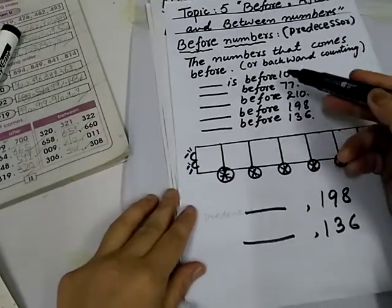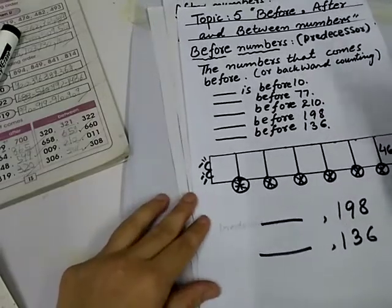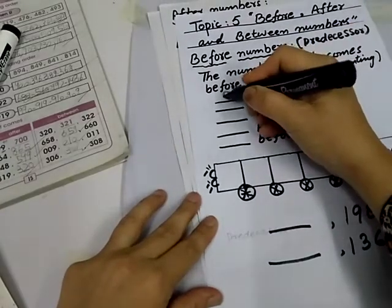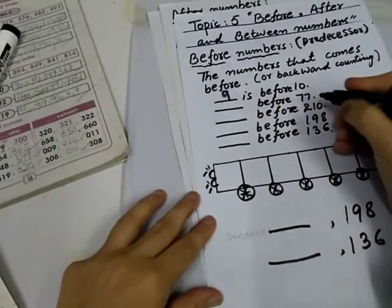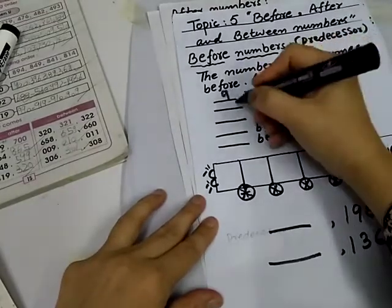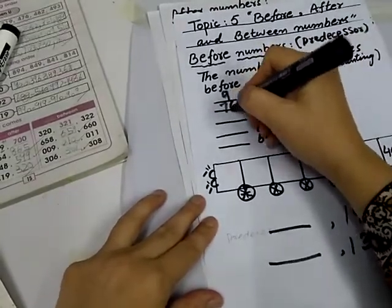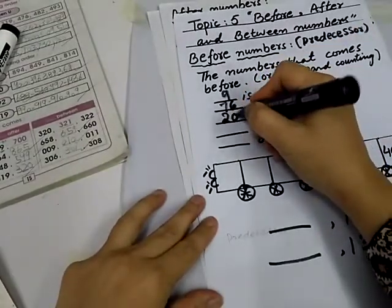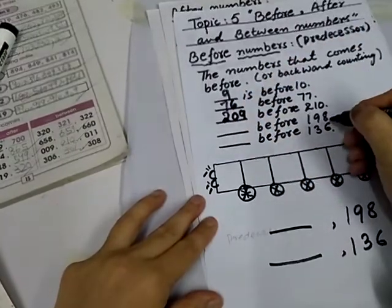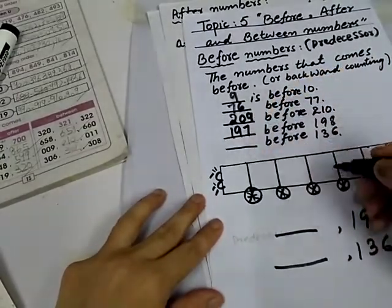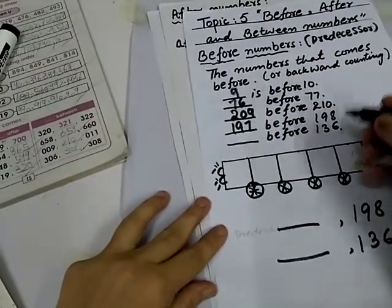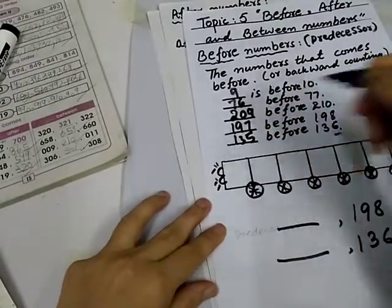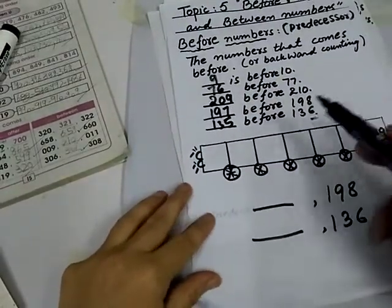For example, dash is before 10. Before means, Pehli, backward. 10 before? 9. 77 before? 76. 210 before? 209. 198 before? 197. And 136 before? 135. These are all before numbers.